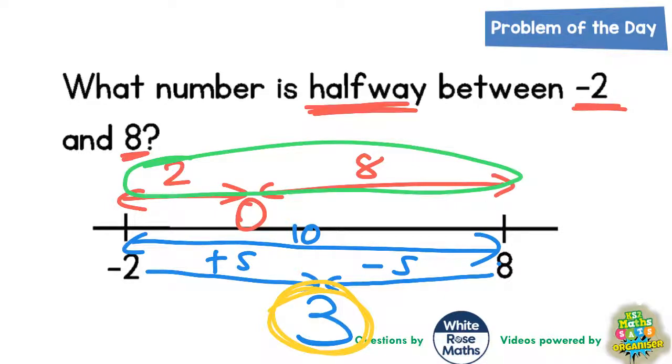There is another way you could do this question. Anytime you're asked to find halfway between two numbers, you can just add them together and then half your answer. So you could do minus 2 add 8 and then half it. Well, minus 2 add 8 is 6. And half of 6, 6 divided by 2 is 3. Which also, again, gives us an answer of 3.